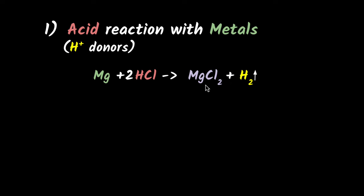So you get a salt — magnesium chloride — and you have hydrogen gas liberated.